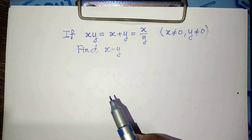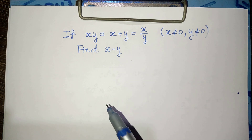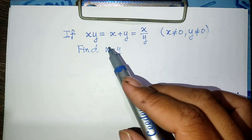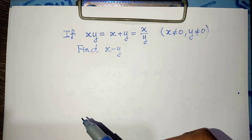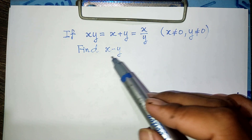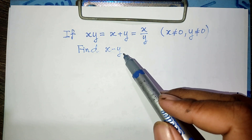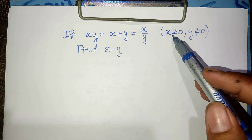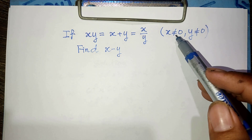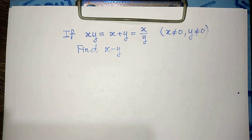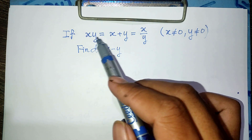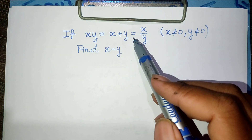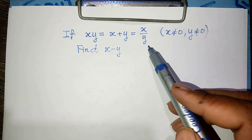Okay, now let's go to the solution together. To find the values of h minus y, we must find the values of h and the values of y. We know that h is non-zero and y is non-zero. We have x multiplied by y equal to h plus y, and also equal to h divided by y.